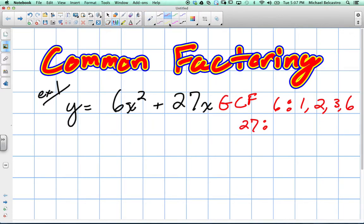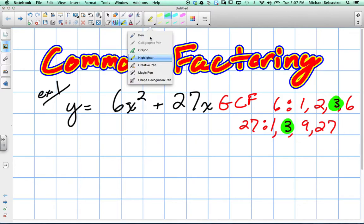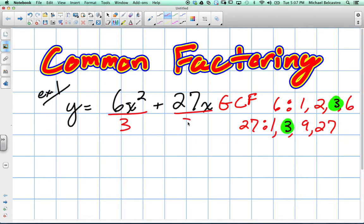What are factors of 27? 1, 3, 9, and 27. So what would be our greatest common factor here? 3. Exactly. So this is going to be the coefficient, or in other words, what we're going to divide both of these by. So we're definitely going to divide both of these by the value of 3.